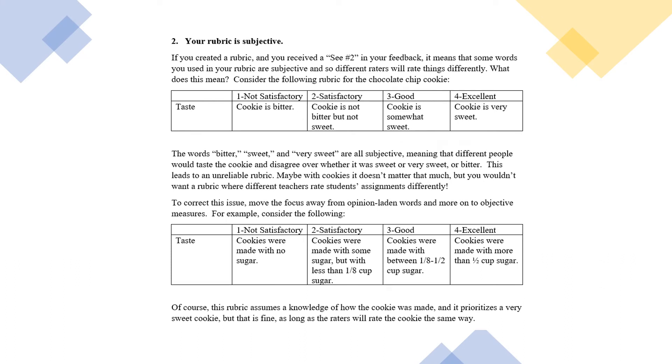If you get a rubric error number two, it means your rubric is too subjective. Let's take a look at the example here. Suppose we're trying to assess the taste of the cookie.